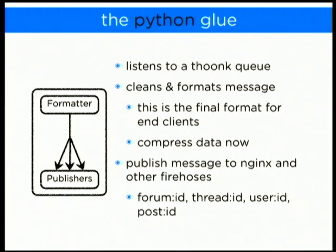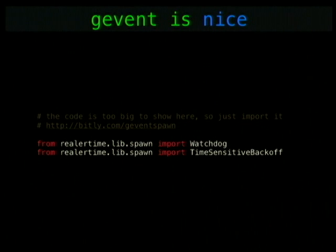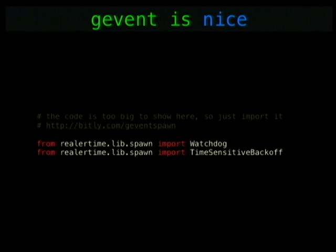Originally with Redis pub/sub we were publishing to tons of keys — the forum ID, thread ID, user ID, post ID — we published to all of them, because pub/sub is basically free and it allows for future innovation. Someone in the future can use it; you've already published everything. People in the company have really liked that approach.